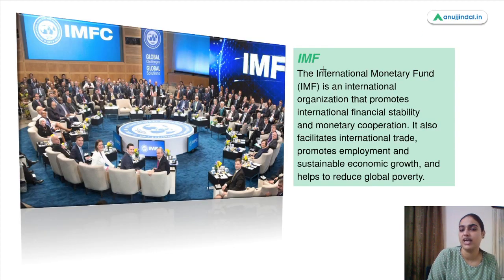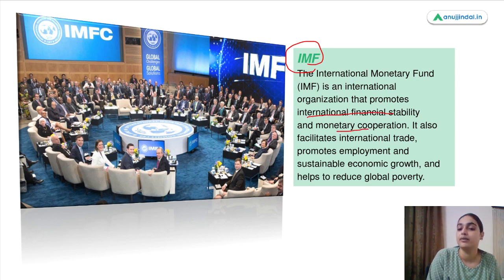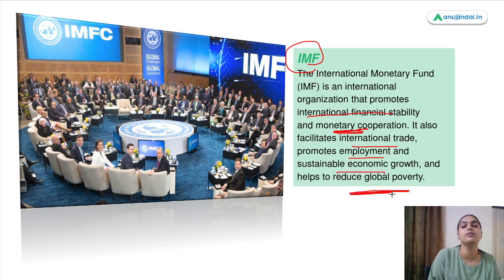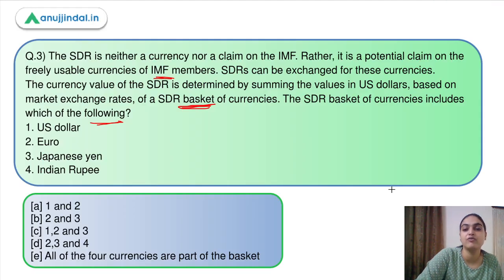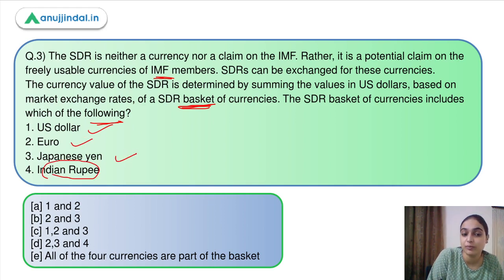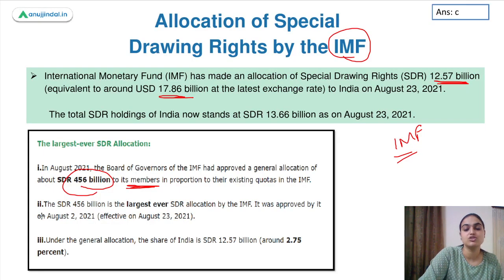A bit about IMF: it is an international organization with around 190 member countries that works towards international financial stability, monetary cooperation, and it also facilitates international trade, generates more employment, ensures sustainable economic growth, and reduces overall global poverty. Coming back to the question, we had to identify which of these is part of the basket of currencies: US dollar, Euro, Japanese yen — yes. Indian rupee — no. So options 1, 2, and 3 are part of these currencies and the answer is option C. That was all for today's session.